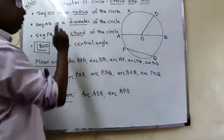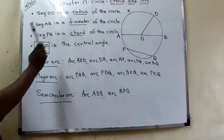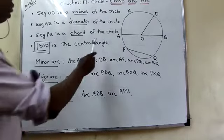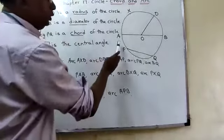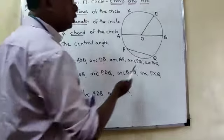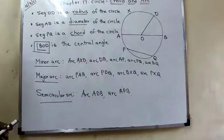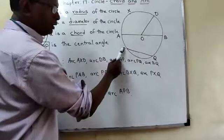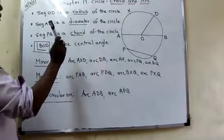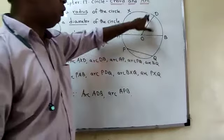Segment AB is the diameter — diameter means twice the radius. Segment PQ is a chord — the line which doesn't pass through the center. PQ is called a chord. AB is also a chord, but it's called the largest chord. The segment which doesn't pass through the center is called a chord.